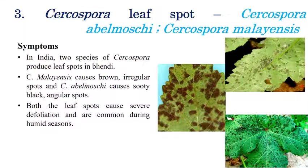The third disease is Cercospora leaf spot, caused by Cercospora abelmoschi or Cercospora malayensis. The symptoms include small, brown, irregular-shaped, sunken spots appearing on leaves. In severe stages, these small spots coalesce and combine to form very large spots. In humid conditions with favorable temperatures, defoliation can also be observed. Sooty black irregular spots may also appear in some cases.